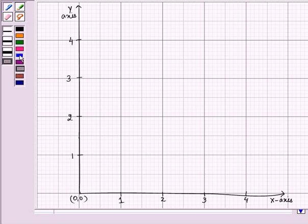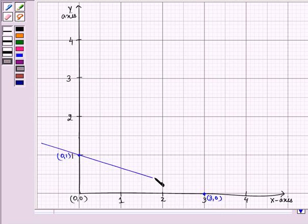Here, when the value of x is 0, then y's value is 1, so this is the point 0, 1. When the value of x is 3, then the value of y is 0. So on joining these two points, we will be representing the line that is x plus 3y equals 3.